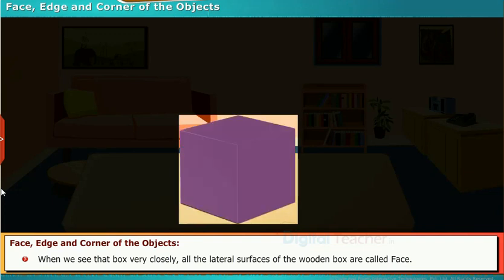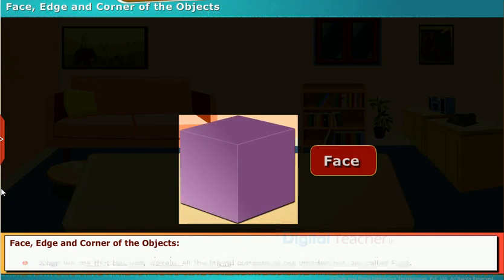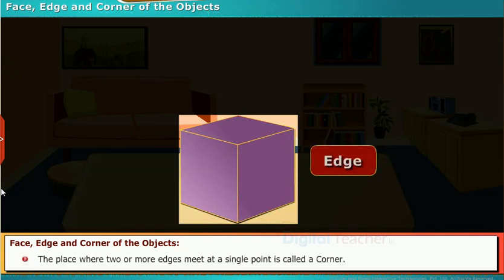all the lateral surfaces of the wooden box are called face. The joining of two faces is called an edge. The place where two or more edges meet at a single point is called a corner.